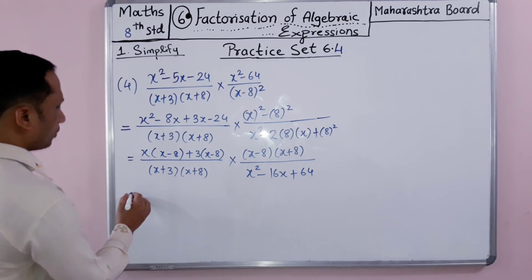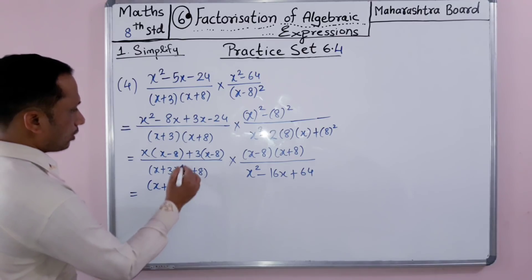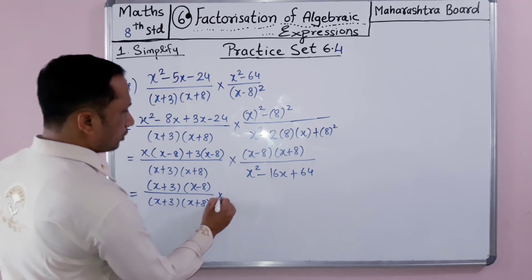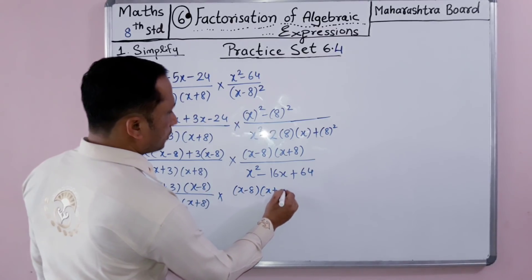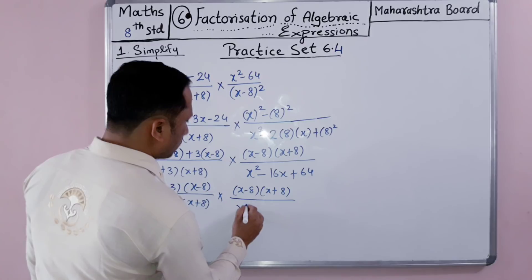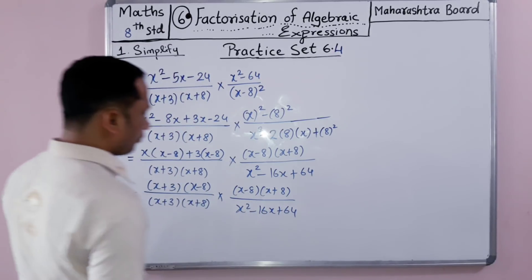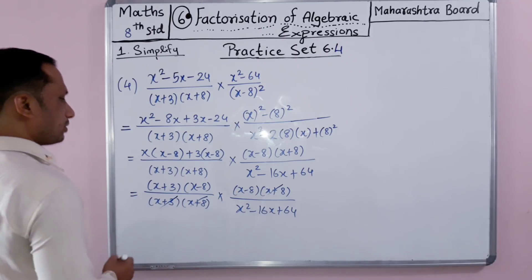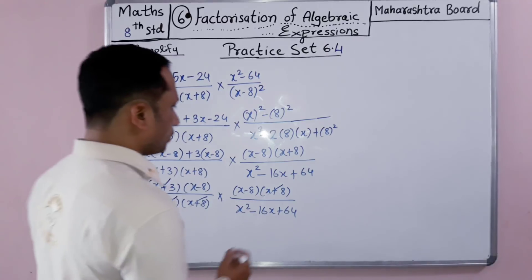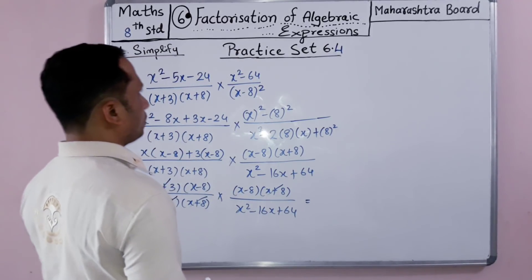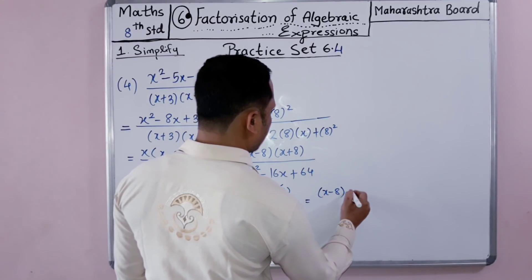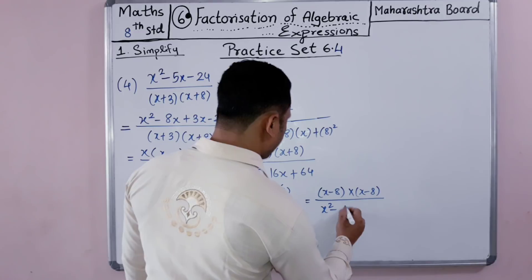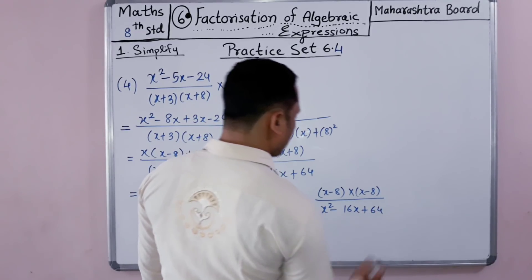Now we identify what is common and cancel. We have x plus 3 over x plus 3, and x minus 8 times x plus 8 over x squared minus 16x plus 64. The x plus 8 terms cancel with each other, and the x plus 3 terms cancel with each other. What remains is x minus 8 divided by x squared minus 16x plus 64.